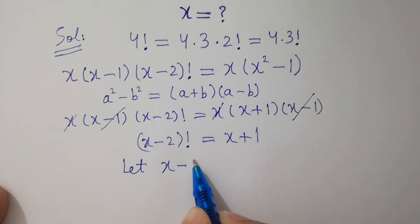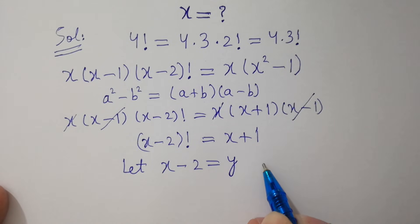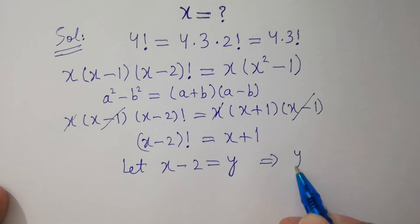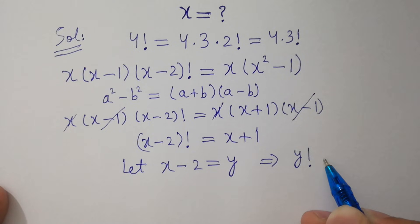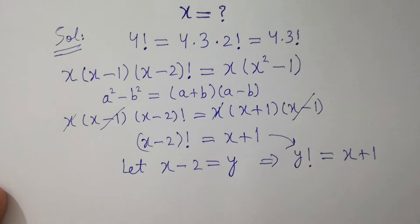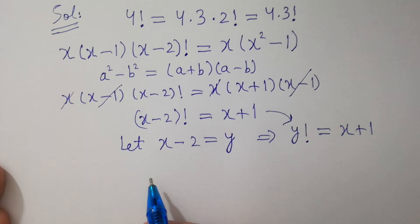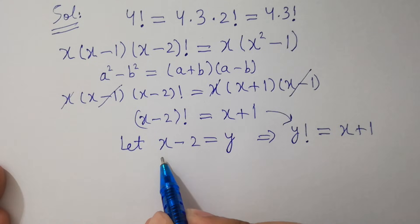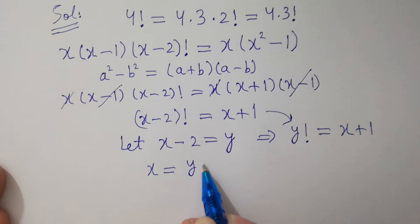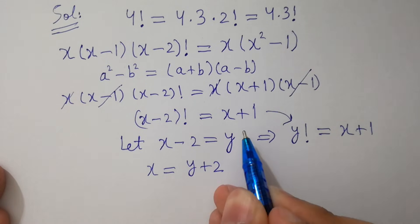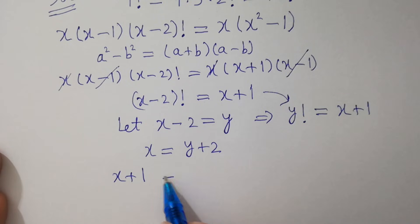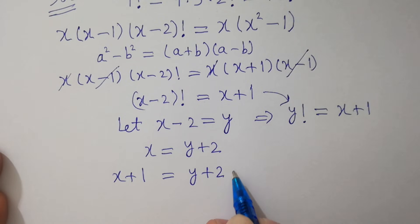Let's suppose that x minus 2 equals y, so this equation becomes y factorial equals x plus 1. From the substitution, x minus 2 equals y, so x equals y plus 2. Therefore x plus 1 equals y plus 2 plus 1.